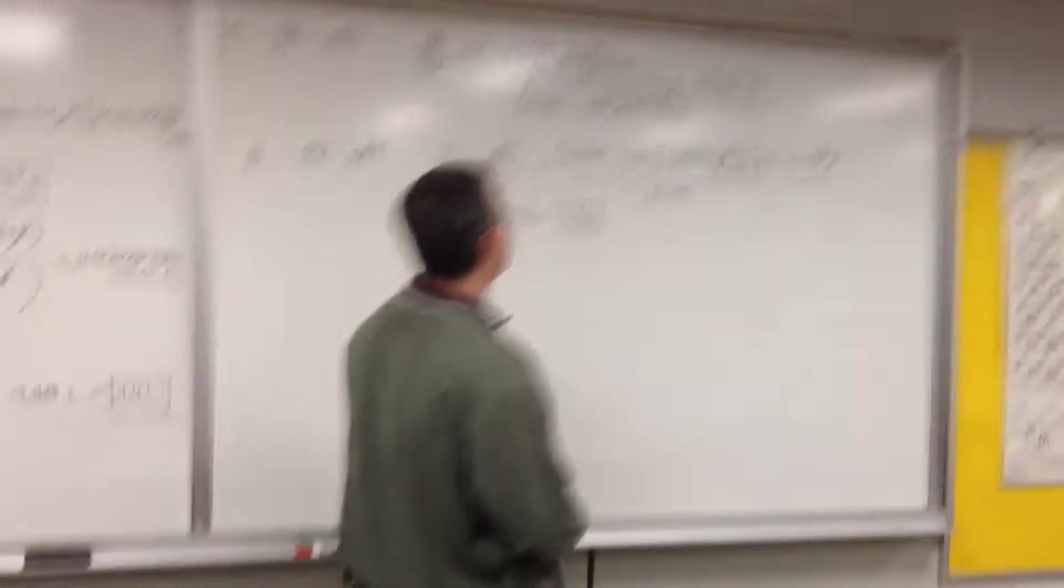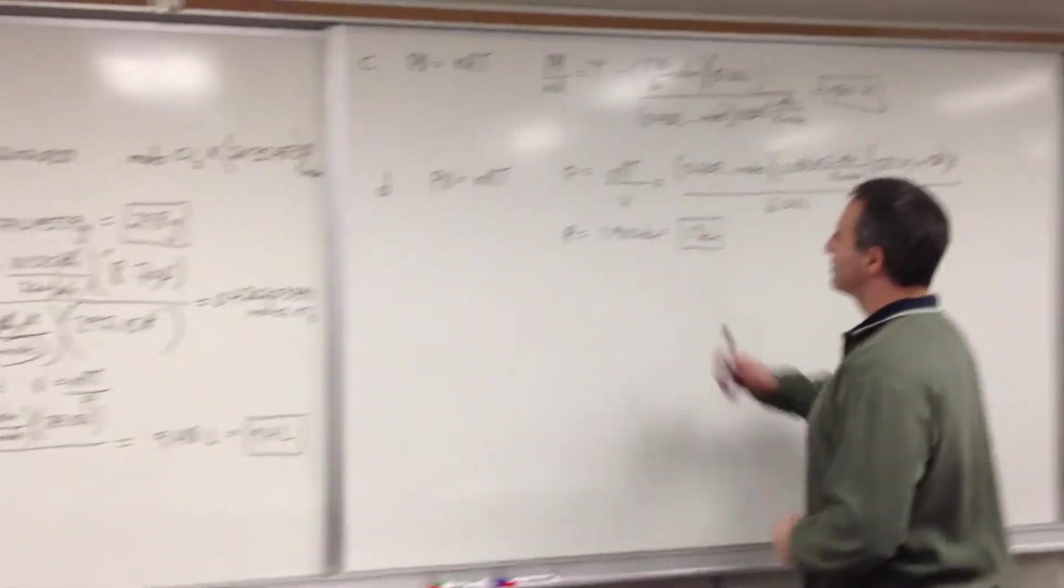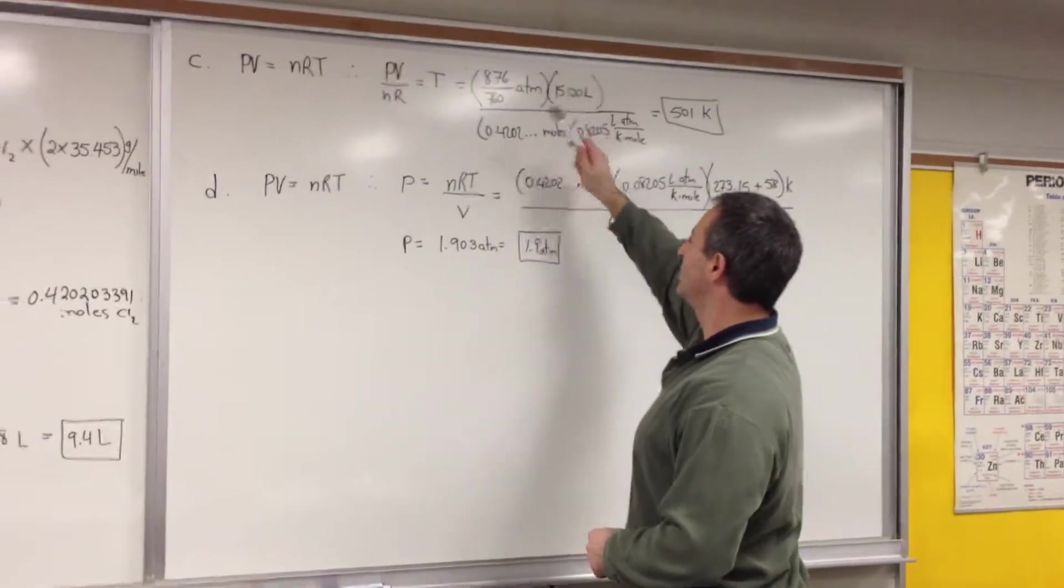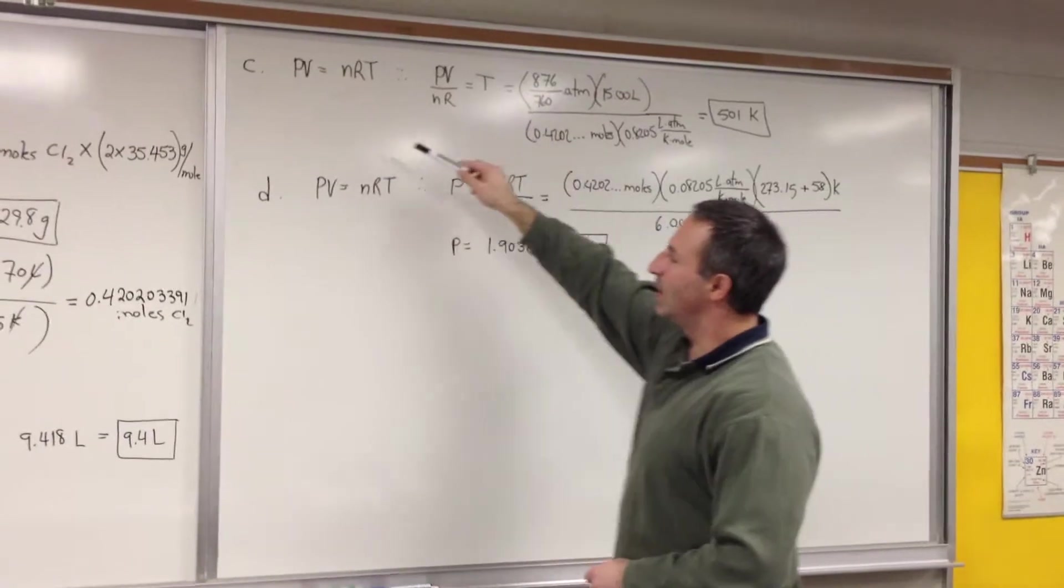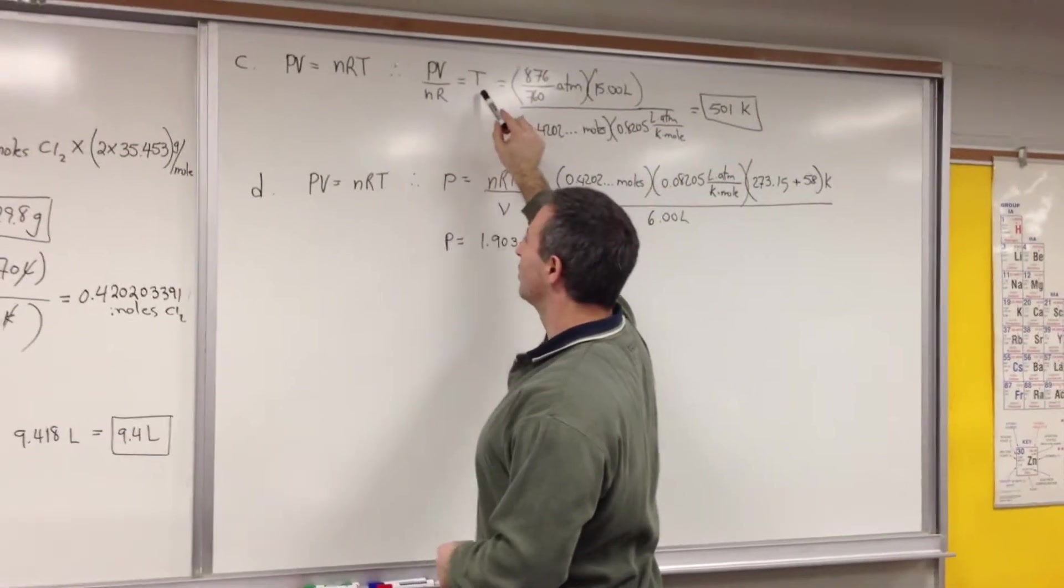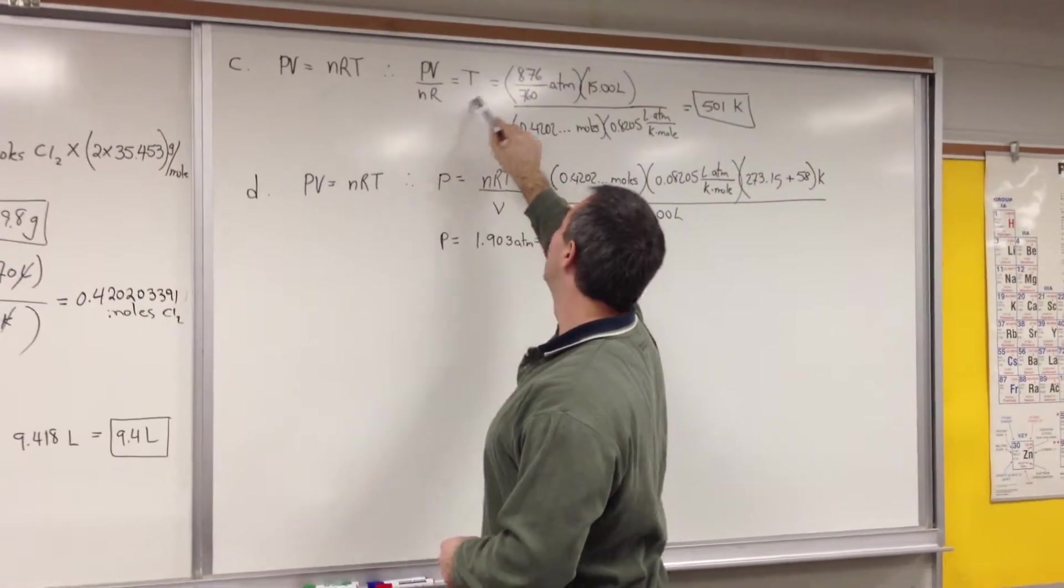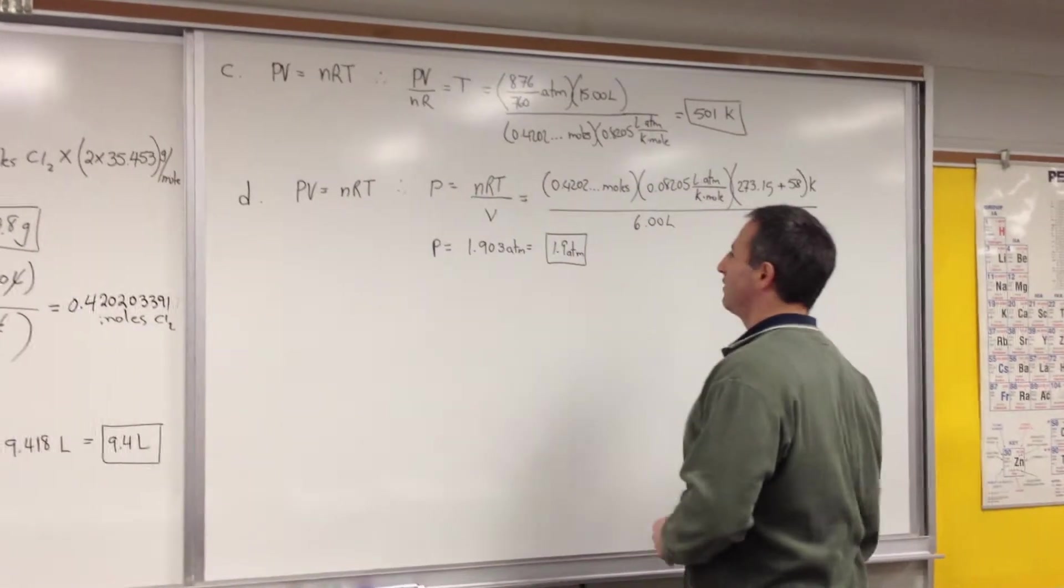In part C, they're asking us for the temperature of the gas under this set of conditions. 15 liters, same number of moles. We've rearranged PV equals nRT to solve for the variable that we're looking for. Enter in all the numbers. We get 501 Kelvin.